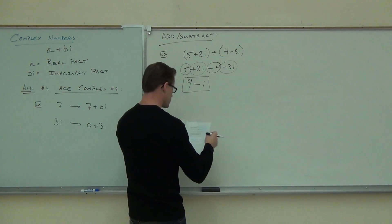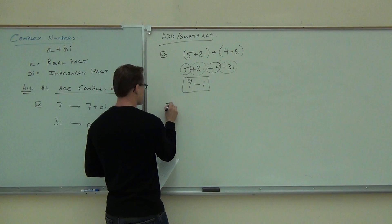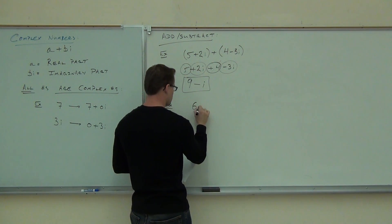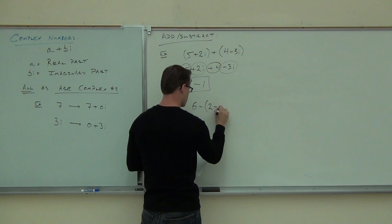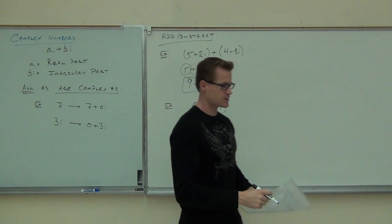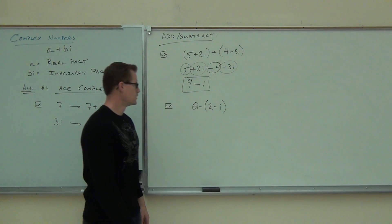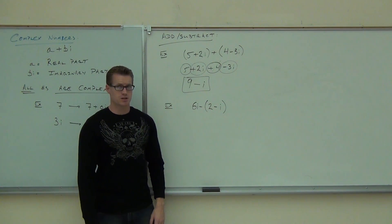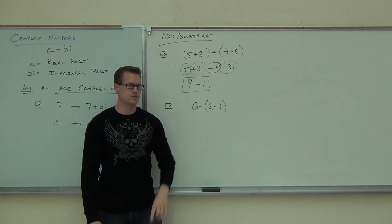Let's try some subtraction. I'll give you a few to do on your own. Let's do 6i − (2 − i). Well, let's talk about this for a bit. Recognize we do have two complex numbers. Everything is a complex number.